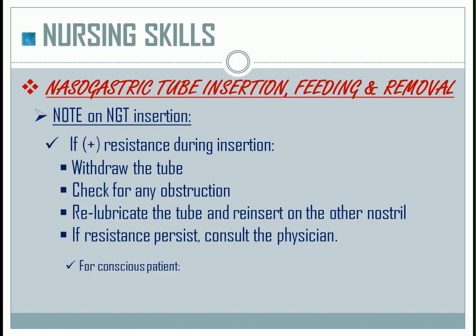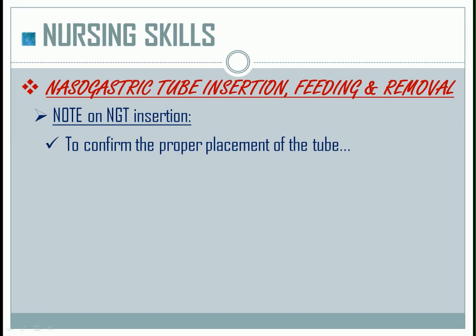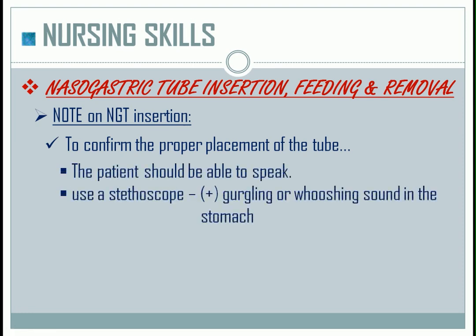For a conscious patient, ask them to swallow to facilitate insertion. To confirm proper placement of the tube, the patient should be able to speak. Another method is using a stethoscope by introducing air while listening for a gurgling or whooshing sound in the stomach. However, the most accurate method is the use of an x-ray.